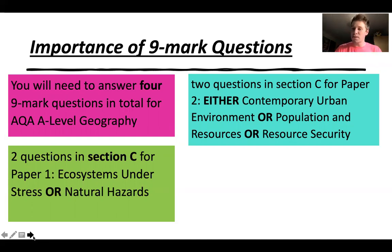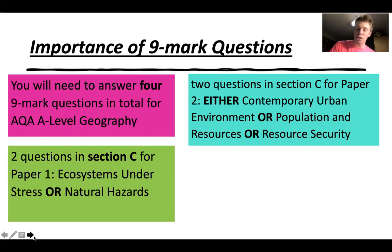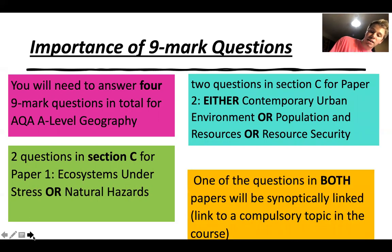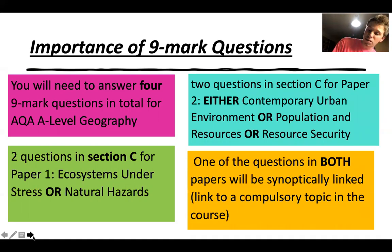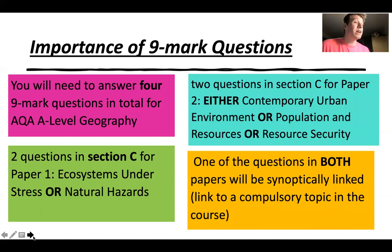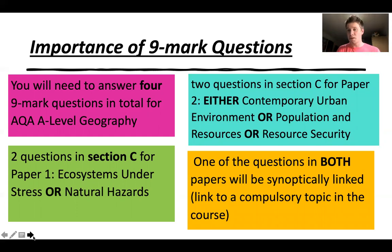Most people do contemporary urban environments, so it's normally the first one — you answer that and ignore the rest of the paper. Keep in mind that one of the questions in both papers will be synoptically linked, meaning you have to link it to other aspects of geography you will have studied in the course.